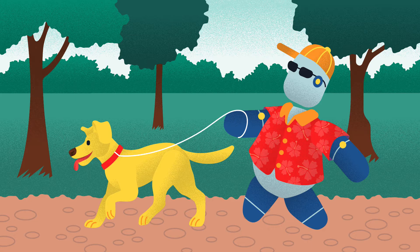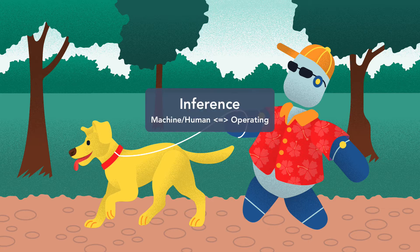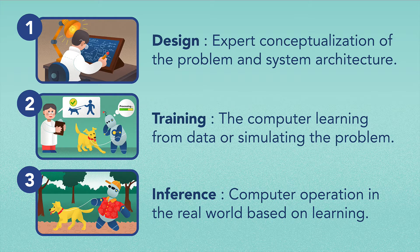Once the world is established, inference can be performed. Inference refers to operating a trained model in this world. Furthermore, inference is about exploiting this established world model. This can be done automatically by a computer system, interpreted by an expert, or any combination of both.